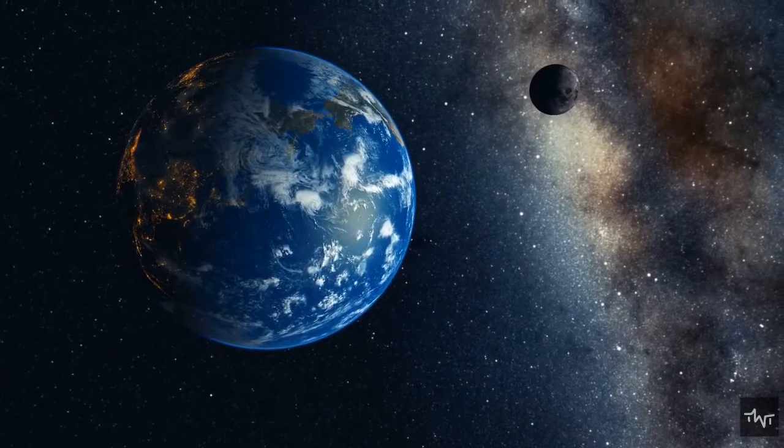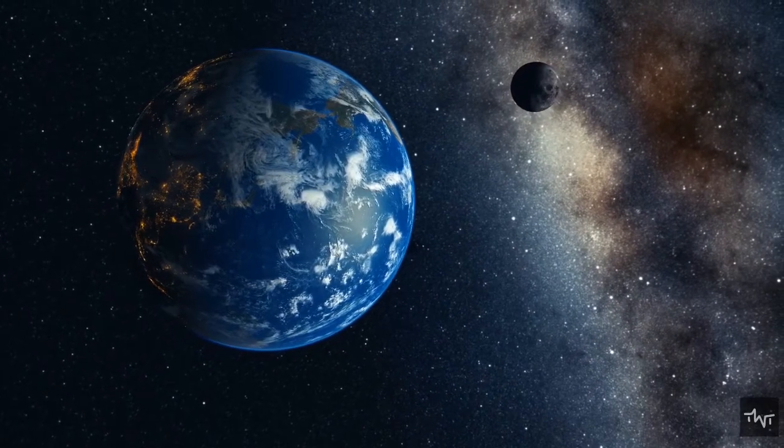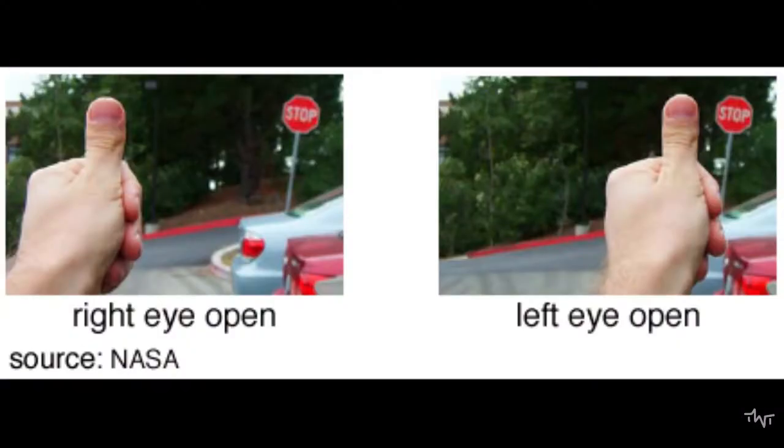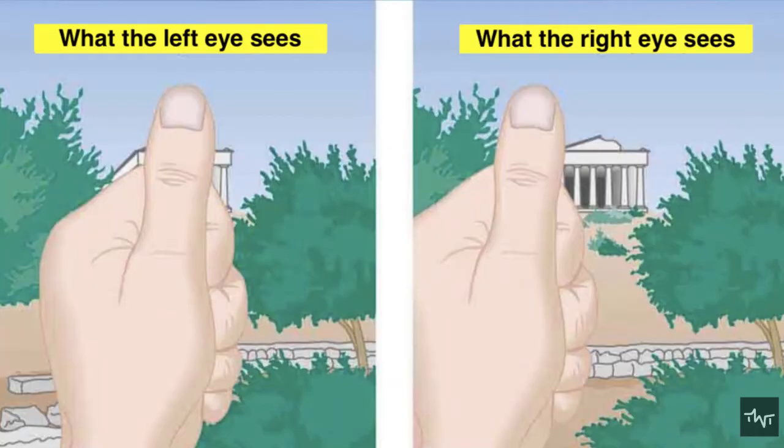You are probably familiar with the phenomenon known as parallax. Let's understand this method first. Hold out your hand, close your right eye, and place your extended thumb over a distant object. Now, switch eyes, so that your left is closed and your right is open. Your thumb will appear to shift slightly against the background. By measuring this small change and knowing the distance between your eyes, you can calculate the distance to your thumb.